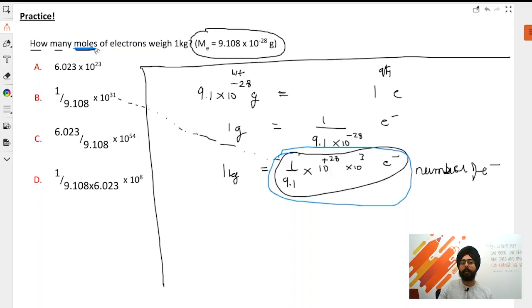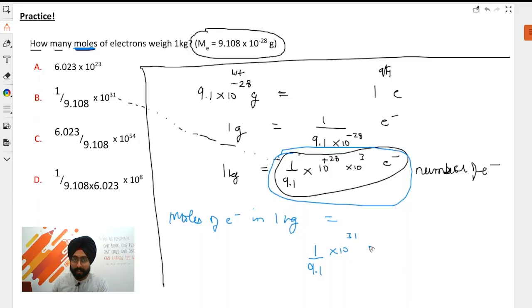Whenever you have confusion in physical chemistry mole concept, always think of a box of chocolates in your mind. Now, for one kg, the number of moles of electrons in one kg equals 1/(9.1 × 10^31) divided by 6.022 × 10^23.